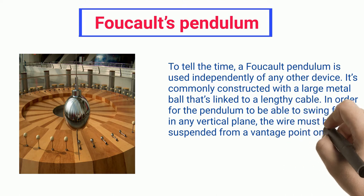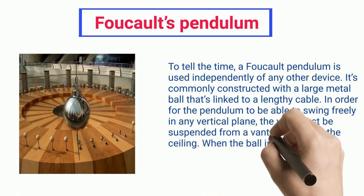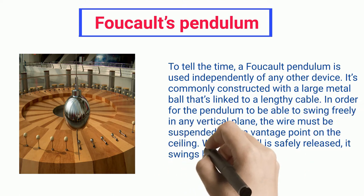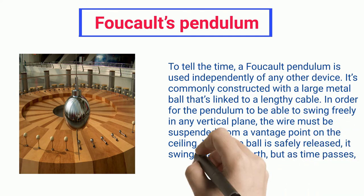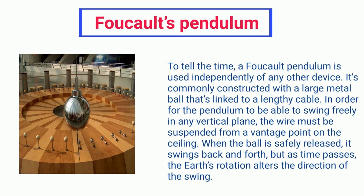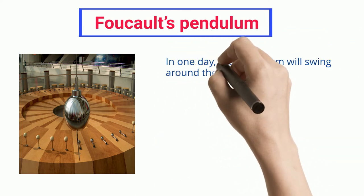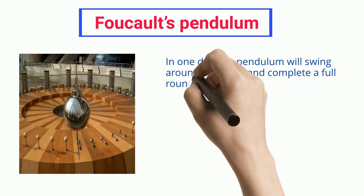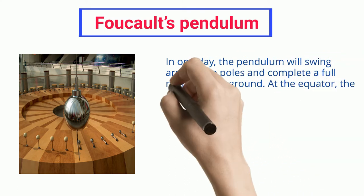When the ball is safely released, it swings back and forth, but as time passes, the earth's rotation alters the direction of the swing. In one day, the pendulum will swing around the poles and complete a full round on the ground.